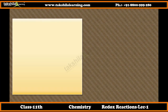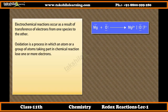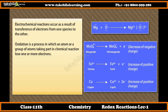Electronic concept of oxidation and reduction reactions. Electrochemical reactions occur as a result of transference of electrons from one species to another. If magnesium is burnt in oxygen, it gets oxidized to magnesium oxide. In the formation of magnesium oxide, two electrons from the magnesium atom are transferred to the oxygen atom. Oxidation is a process in which an atom or a group of atoms taking part in a chemical reaction loses one or more electrons.